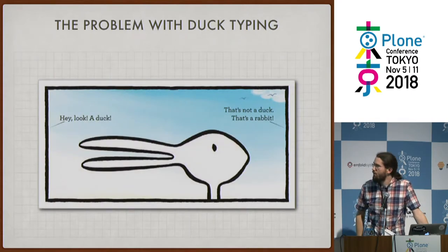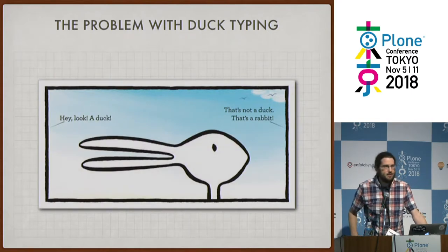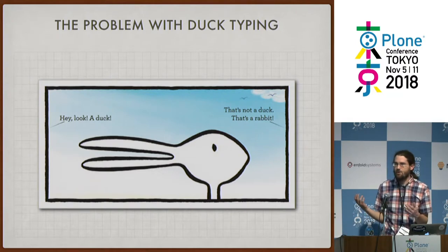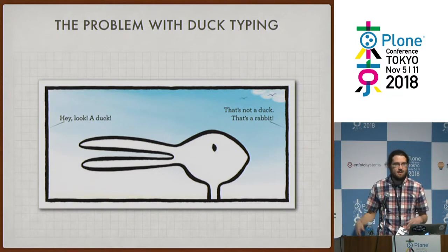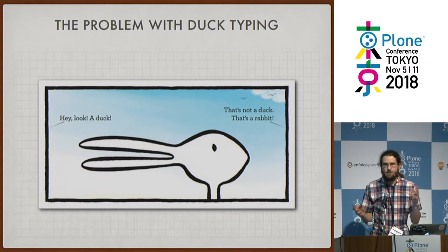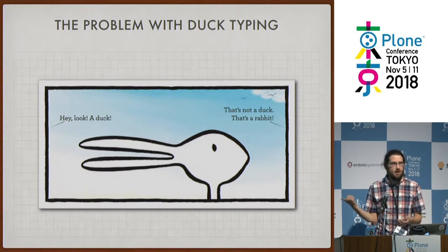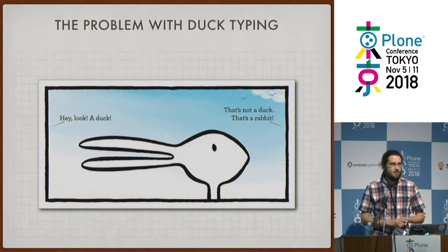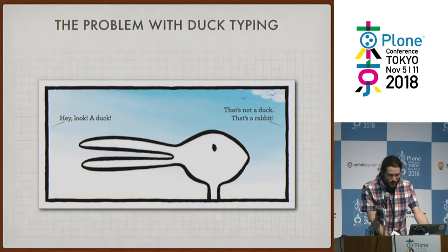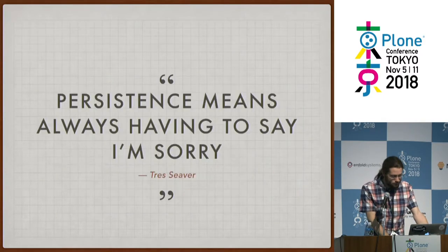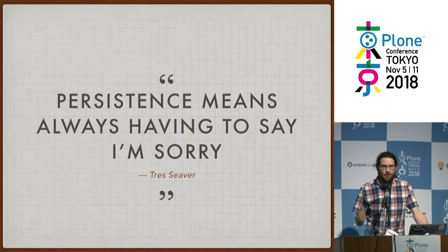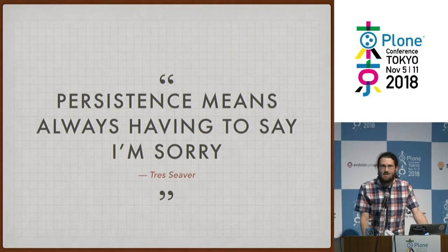It's not obvious how to convert things. A tool walking through the database finds 'bin string' opcodes and doesn't know what they're supposed to become - should they be decoded and become text, or stay as bytes? This is a problem with duck typing: what if you've got something that looks like a duck and walks like a duck, but it also looks like a rabbit and walks like a rabbit? You don't know which one it's supposed to become. And I have to throw in my favorite quote: 'Persistence means always having to say I'm sorry.'